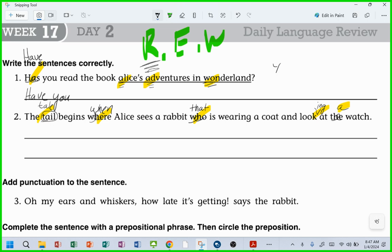because each time you read it, you're going to hear it and you're going to know if it sounds right to you, right? I'm going to read it the original messed up way, Kingston, ready? The tale begins where Alice sees a rabbit who is wearing a coat and look at the watch. Does that sound right to you? No. So as we continue to read it, we can pick out those things that do not sound correct. So that's why we read and then we edit and finally we write our final product, right Noah?